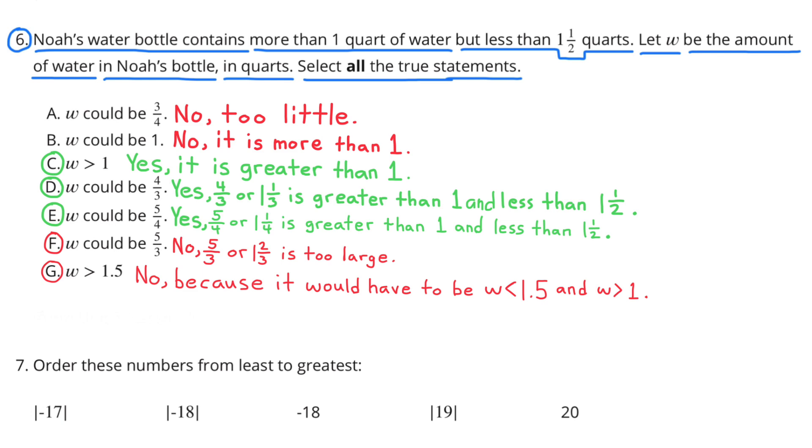C would be true because yes, it is greater than one. And D would be true because yes, four-thirds or one and one-third is greater than one and less than one and a half.